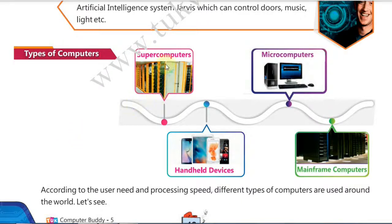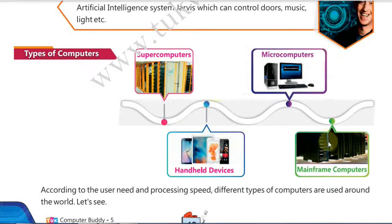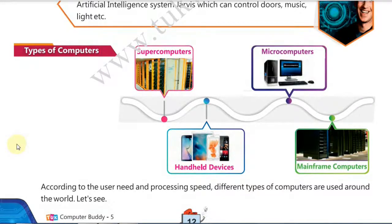Computers are divided into four types: supercomputers, microcomputers, handheld devices, and mainframe computers. Generally, supercomputers and mainframe computers are used by large organizations and research institutions to work faster, solve big calculations, and hold more data. Microcomputers and handheld devices are used for entertainment, communication, personal work, and are used almost everywhere including at home.